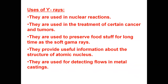Uses of gamma rays: they are used in nuclear reactions. They are used in the treatment of cancer. They are used to preserve food for a long time using soft gamma rays — containers which use gamma rays will preserve food. They provide useful information about the structure of the atomic nucleus. They are used for detecting flaws in metal casting.